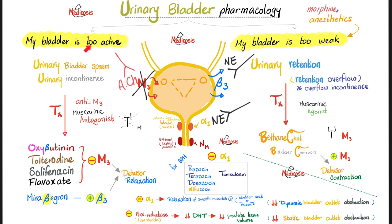The same patient is complaining of leaking urine because the bladder is too active. We can also boost the beta-3 receptor. When you stimulate the beta-3 receptor, it will relax the bladder wall. So we can give mirabegron, which is a beta-3 agonist, also leading to detrusor relaxation. So when the bladder is too active as in urge incontinence, the treatment is a muscarinic inhibitor or a beta-3 agonist.